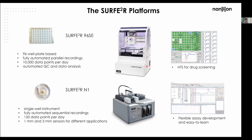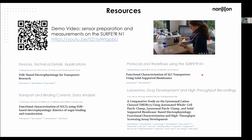Here are the two SURFER platforms again. The Surfer N1 is a single-well instrument, meaning one recording at a time, while the Surfer 96 SE is based on a 96-sensor-well plate with 96 parallel recordings. Assays are generally transferable across both instruments. Typically customers start with the Surfer N1 because it's easy to learn and flexible for assay development, then upgrade to the SE when higher throughput is needed.